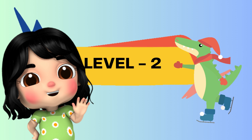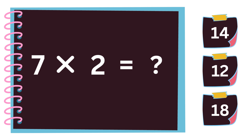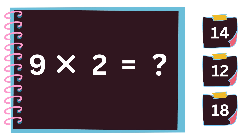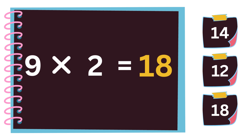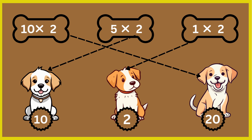Level two. Seven twos are fourteen. Nine twos are eighteen. Match the dogs to its bone. Ten twos are twenty. Five twos are ten. One twos are two.